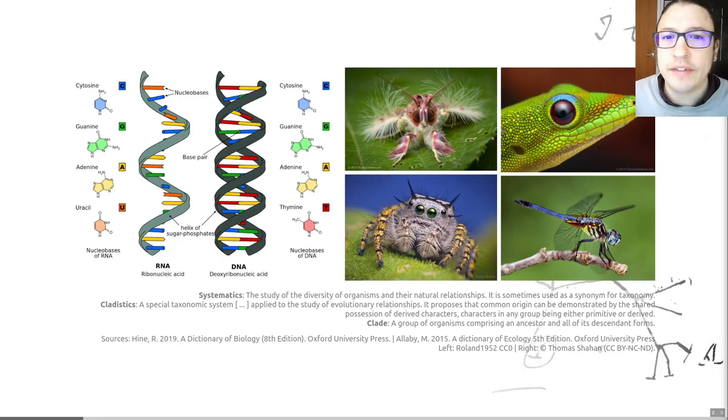When we are studying the patterns of evolutionary relationships, we can call this systematics. Systematics is the study of the diversity of organisms and their natural relationships. Sometimes, this word is used as a synonym of taxonomy, as per the definition on that slide. But that's not really correct, because systematics is kind of like a subset of how we do that. We're looking at the evolutionary relationships and ignoring a number of other ways that we could choose to do this.